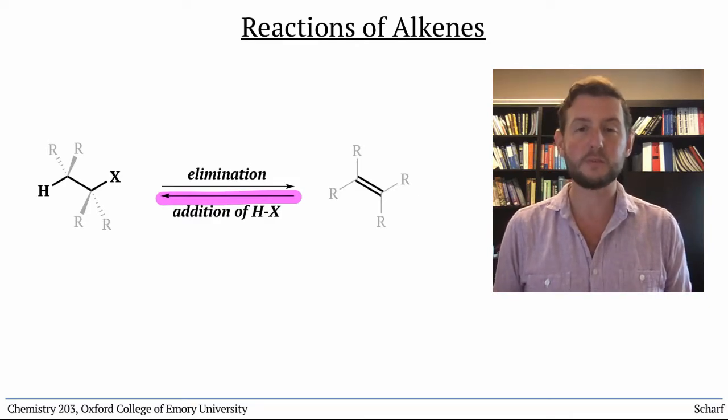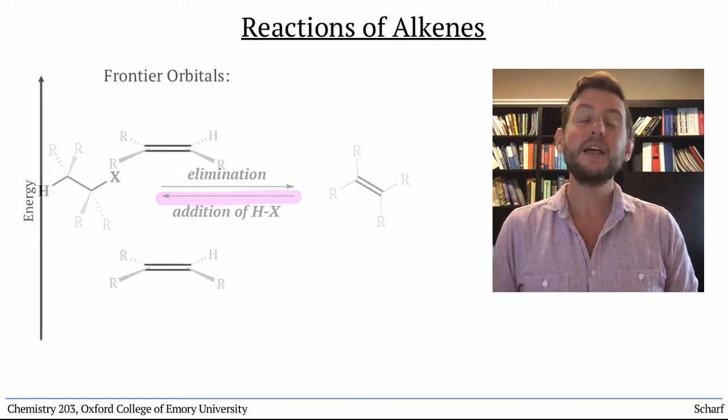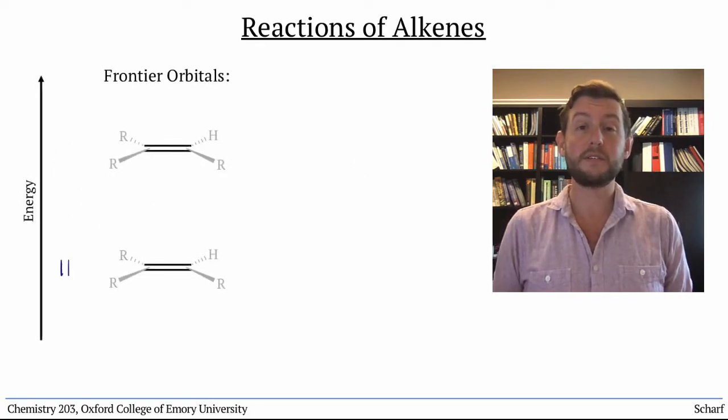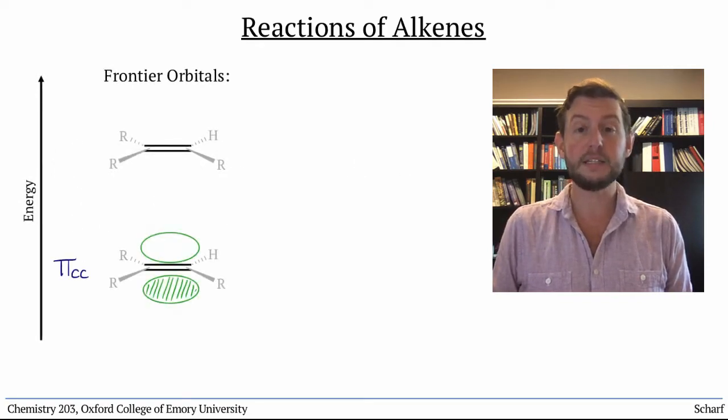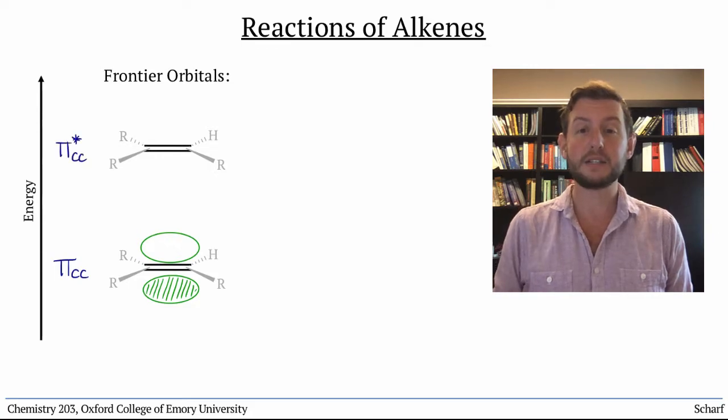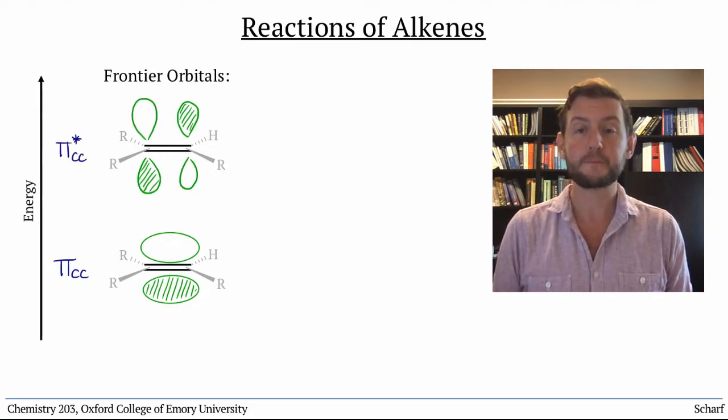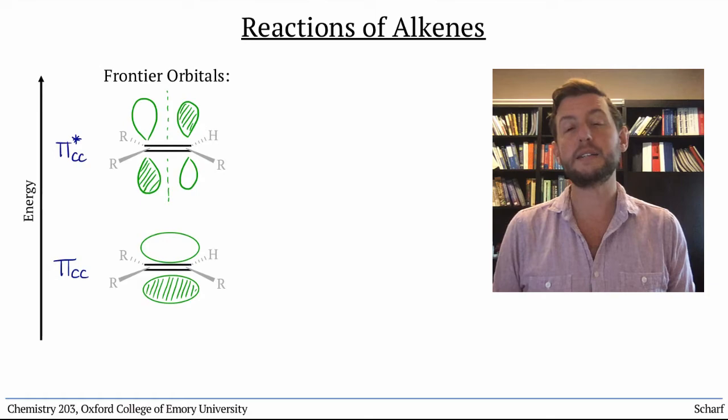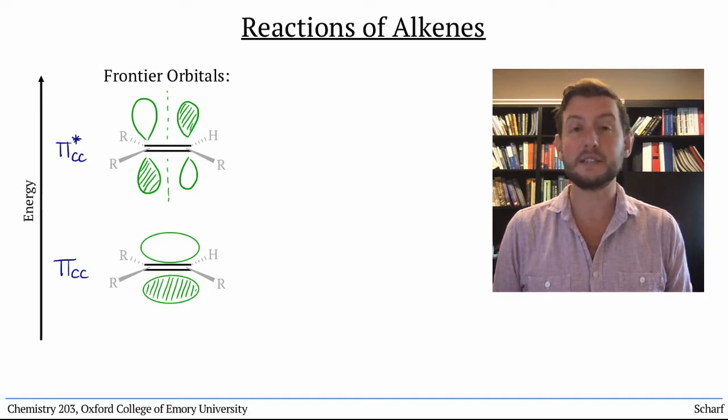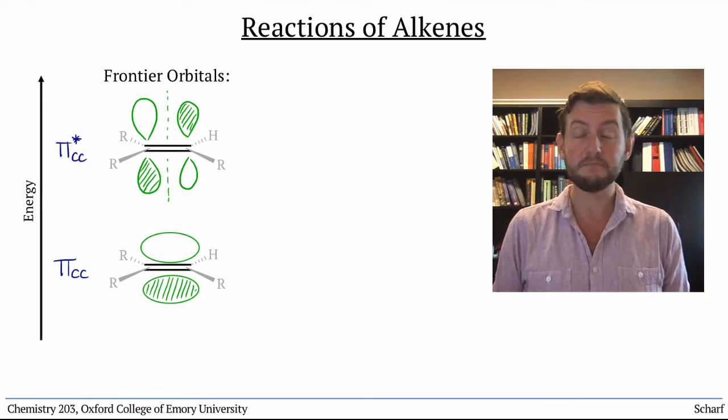The frontier molecular orbitals of an alkene are pi cc, its HOMO, and pi star cc, its LUMO. Early in the semester, I said that pi star cc isn't a good acceptor orbital, and that's correct.